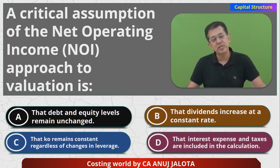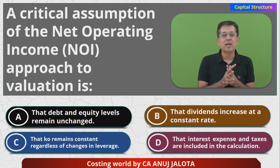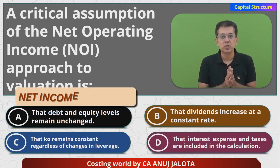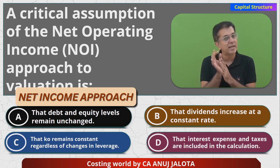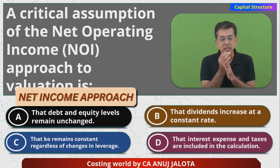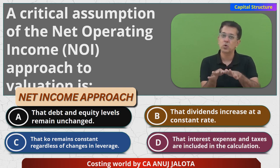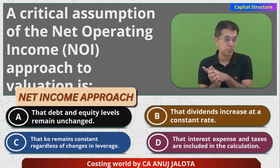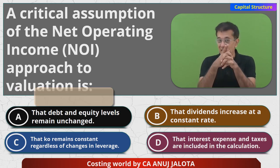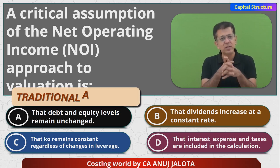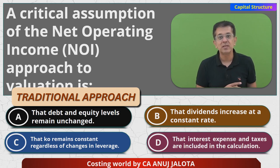There were three approaches to capital structure that became very famous. The first was the Net Income approach, which always held that Kd is lower than Ke, so a company should try to increase debt to ultimately reduce overall cost of capital. Then there was the NOI approach, which this question is about, and then there was the Traditional approach. If you know the answer, this is the time to comment.